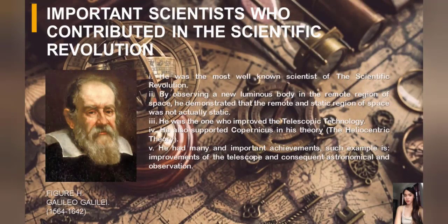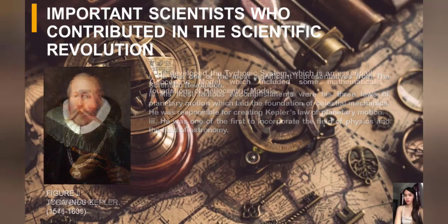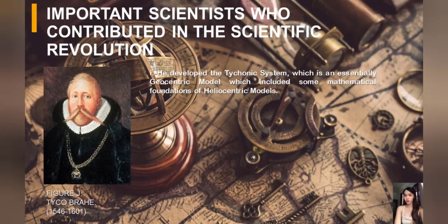Galileo Galilei studied physics. He eventually combined his laws of physics with observations through his telescope to defend the heliocentric Copernican view of the universe. Johannes Kepler is best known for his three laws of planetary motion, which explain the orbital properties of planets. Tycho Brahe developed the Tychonic system, deriving a view of the solar system in which the sun and moon orbited the Earth, and the remaining planets orbited the sun.